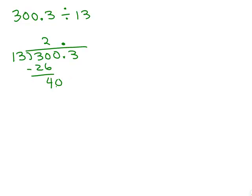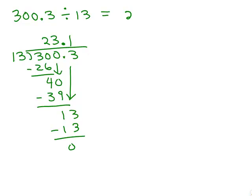So 13 goes into 30 twice. And then 13 goes into 40 three times. So 3 times 13 is 39. And then bring down the last digit here. Remember, all you're doing is bringing down the next digit each time and that's 1. And it goes in evenly so this answer is 23.1.